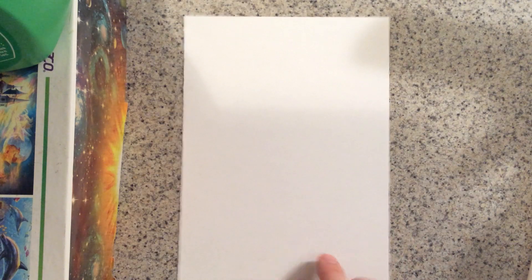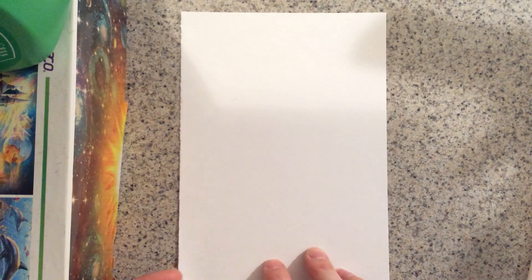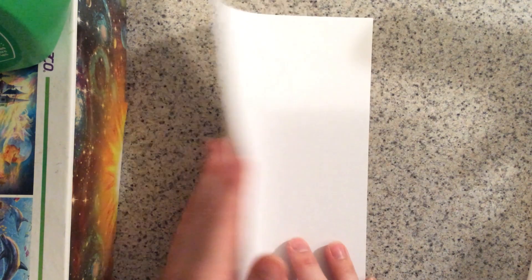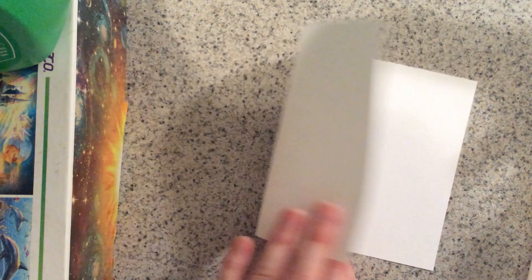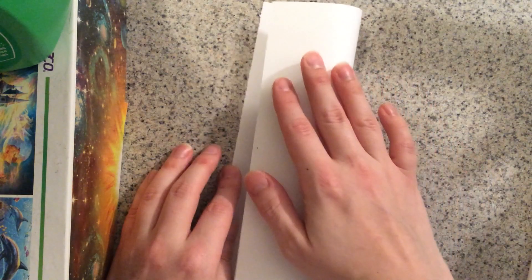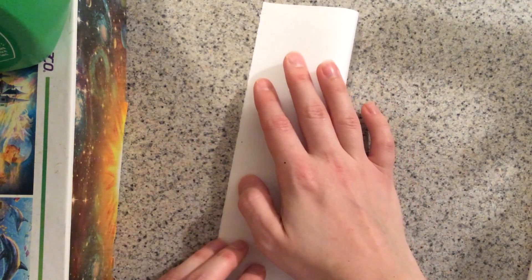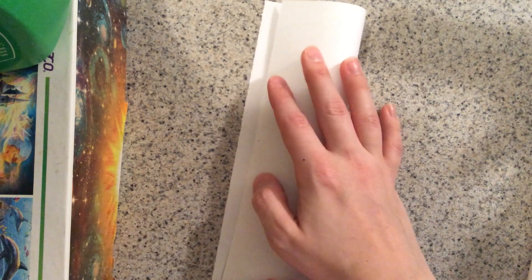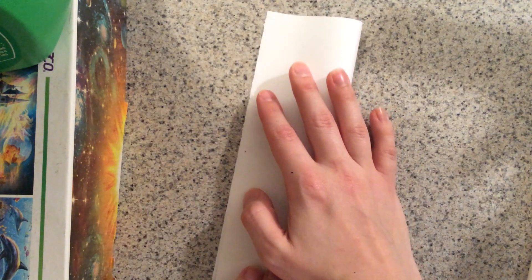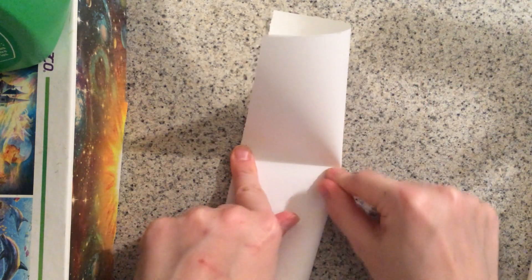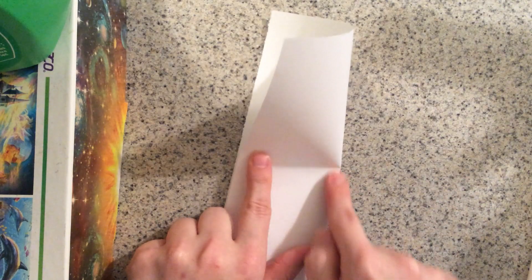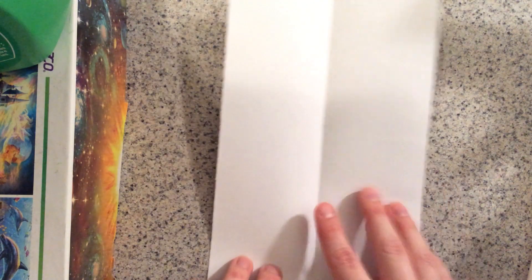So the first thing that you're going to want to do is you're going to take your paper and you're going to fold it in half. It can be folded in half this way or it can be folded in half this way. Doesn't matter. You just want one line of symmetry somewhere. So I like to match my edges up as best I can. Put my finger down to hold, slide, go down this way, and go on up this way. Then you're going to open that back up.